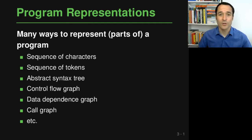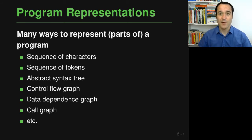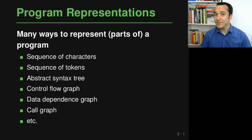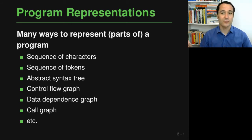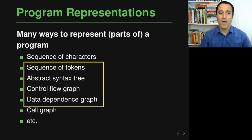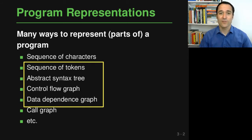Let me start with some background on program analysis, and in particular on the question of how a program can actually be represented when it's processed by an algorithm or by a computer. There's one obvious representation that everybody has seen when writing code, which is to represent code as a sequence of characters. It turns out that this is not the best representation, and there are many others that people working on program analysis like to use, including sequences of tokens, abstract syntax trees, control flow graphs, data dependency graphs, call graphs, and many others. We will focus on a few of these which we will revisit throughout the course.